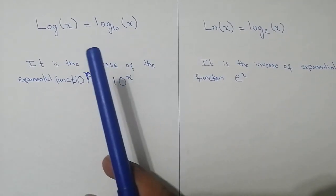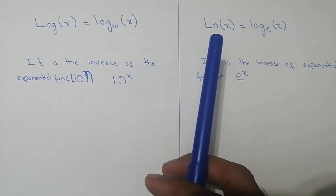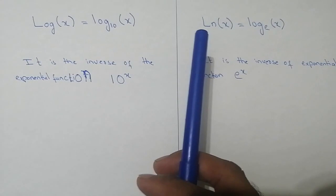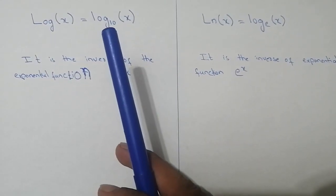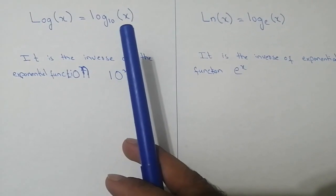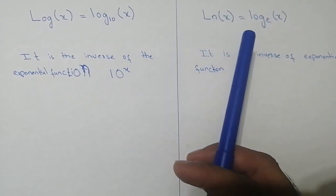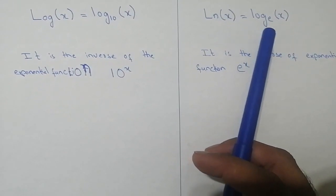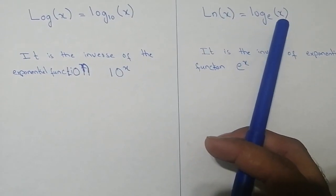Log is usually called the common log, and ln is the natural log — 'n' for natural and 'l' for log. The simplified form of log has a common base of 10 and x, and in the ln, the simplified form has a common base of e and x.